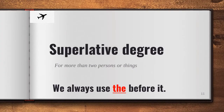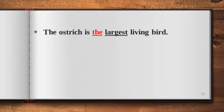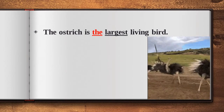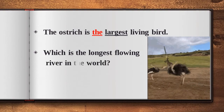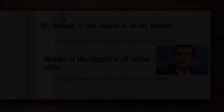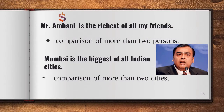Now we will move towards our third degree, and that is the superlative degree. An adjective used to compare more than two nouns is said to be in the superlative degree. We always use 'the' before it. For example, the ostrich is the largest living bird. Which is the longest flowing river in the world? Mr. Ambani is the richest of all my friends — comparison of more than two persons. Mumbai is the biggest of all Indian cities — here, we have compared more than two cities.